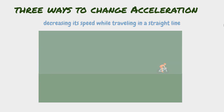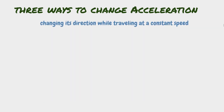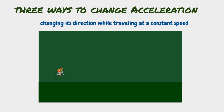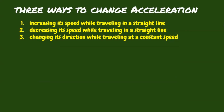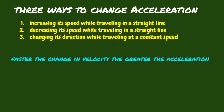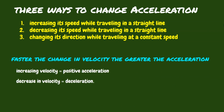And third, by changing its direction while traveling at a constant speed. For example, this bike is traveling in a straight line at first, but changes its direction at a constant speed. Take note that the faster the change in velocity, the greater the acceleration would be. An increasing velocity is positive acceleration, and a decrease in velocity is called deceleration.